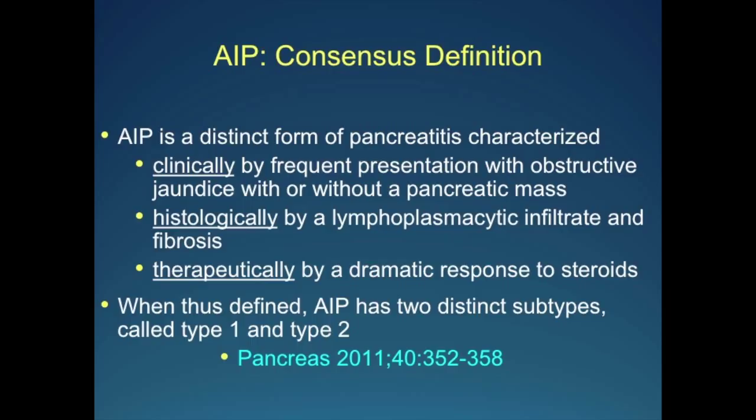I don't have the answers to all the questions I raised, but it's interesting. So what is AIP? The consensus definition of AIP was that it's a distinct form of pancreatitis characterized clinically by frequent presentation with obstructive jaundice without a pancreatic mass, histologically by a lymphoplasmacytic infiltrate and fibrosis, and therapeutically by a dramatic response to steroids.